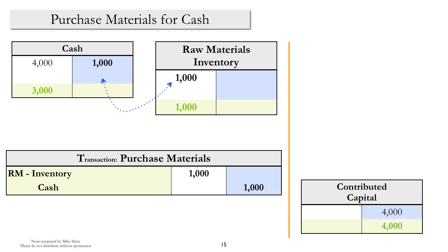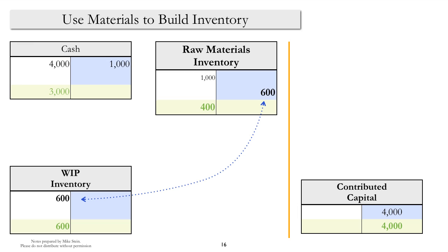Our first transaction is going to be to purchase some inventory of raw materials for cash. We record this using a journal entry and then post it to the general ledger accounts, represented with T-accounts. You can see the debit to raw materials and the credit to cash, and everything stays in balance.